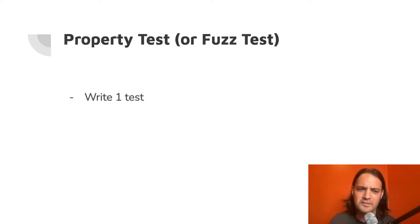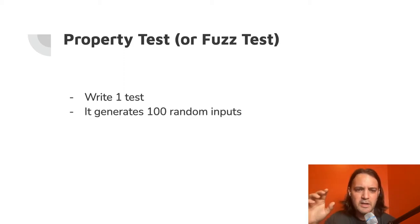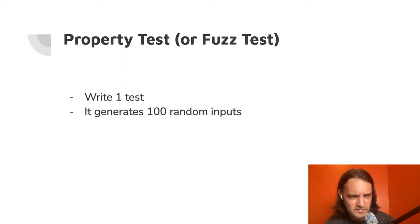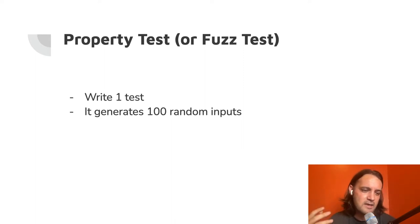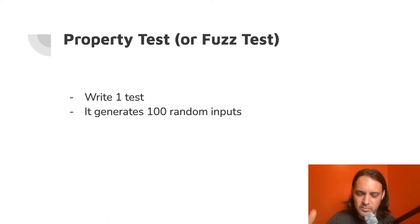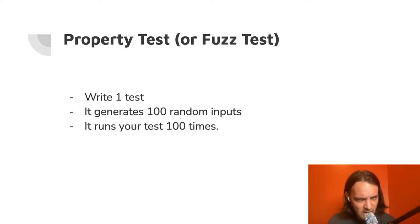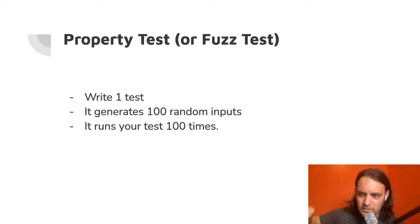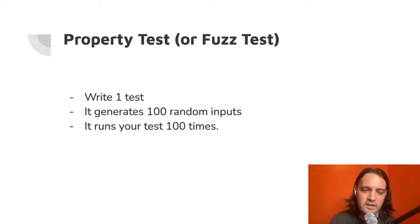Property tests, or fuzz tests, are basically: you write one test, but it generates 100 random inputs. So if you have a function and you want to test it 100 different times with 100 different inputs, you write it one time and say give me 100 random numbers, and it'll do that. It'll run your test 100 times with those inputs. Each invocation — test one is the first input, test two is the second — and so on, but you only write it once.